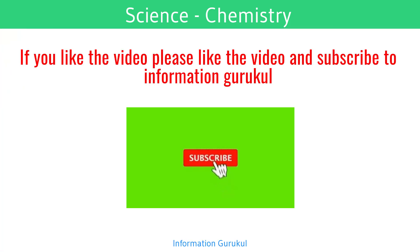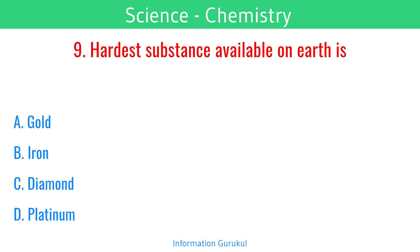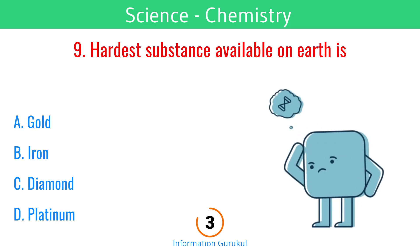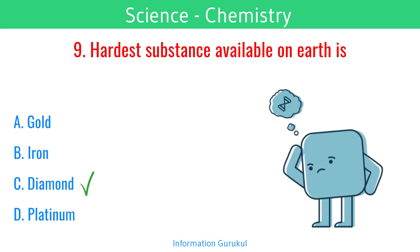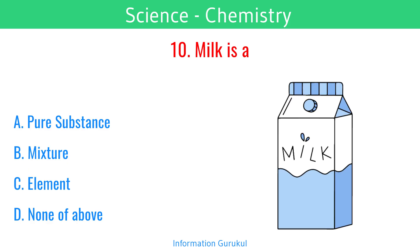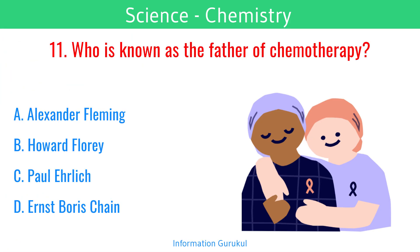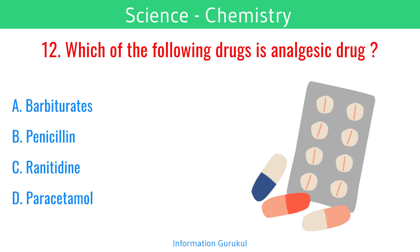The hardest substance available on earth is diamond. Milk is a mixture. Who is known as the father of chemotherapy? Paul Ehrlich. Which of the following drugs is an analgesic drug? Paracetamol.